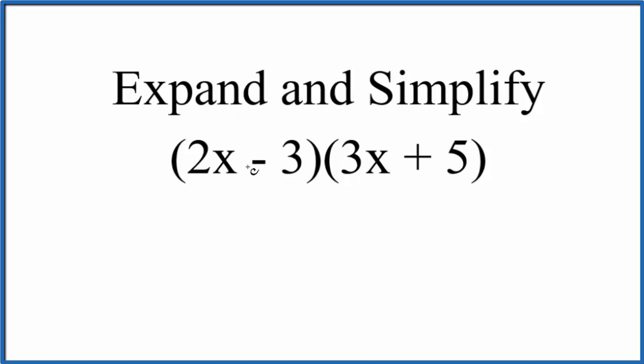Really, all we're doing is we're taking this first term here and multiplying it by everything over here. Then, we take the second term and we multiply it by everything here. We're just distributing this across here.